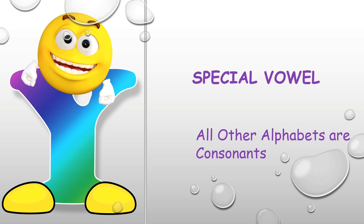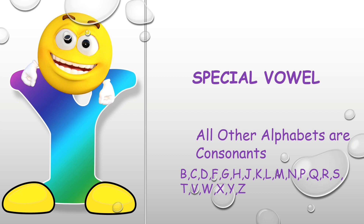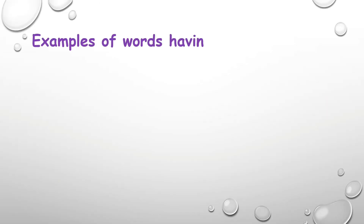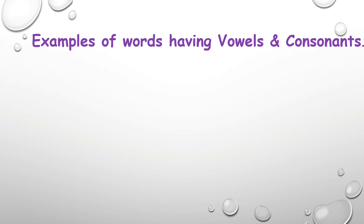Other than A, E, I, O, U, the other alphabets are consonants — that is B, C, D, F, G, H, J, K, L, M, N, P, Q, R, S, T, V, W, X, and Z. These letters are consonants. Let's see some examples of words having vowels and consonants.